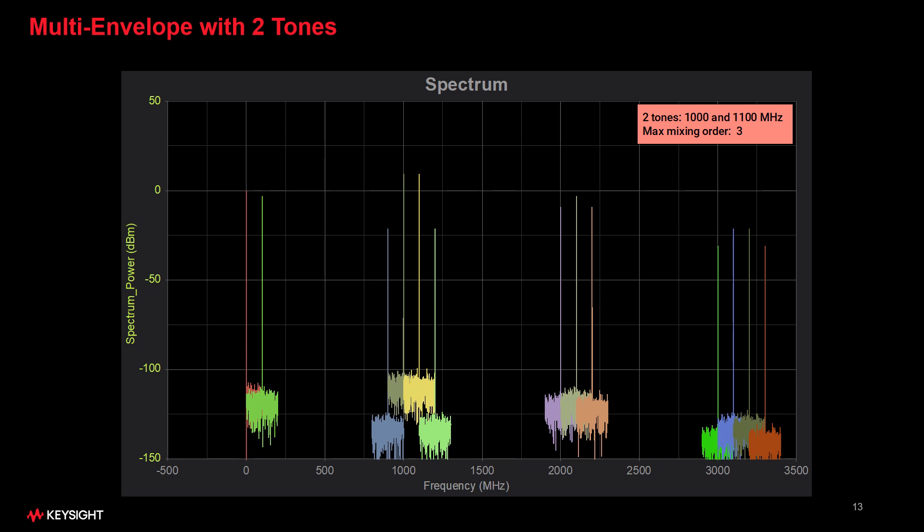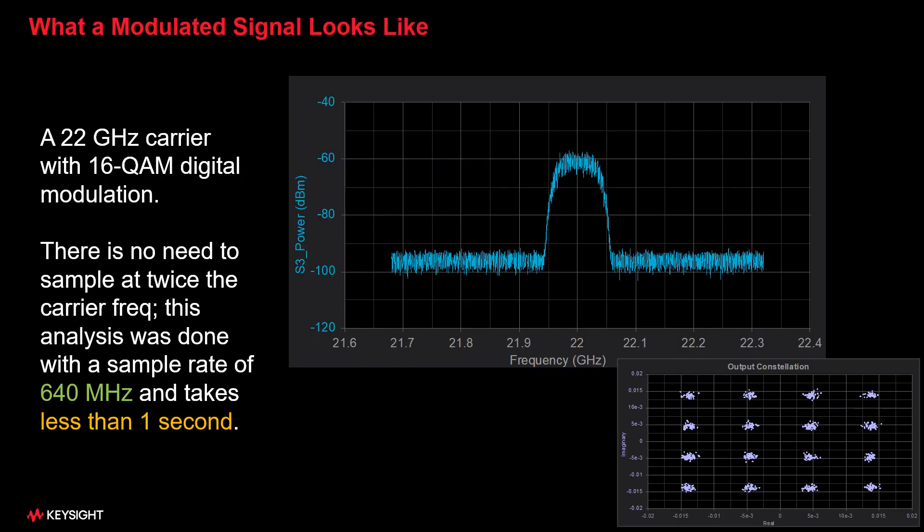To wrap up our look at multi-envelope, here's a screenshot of a carrier with modulation along with a demodulated constellation here in the lower right, which is a common measurement in envelope analysis. The carrier is at 22 gigahertz, but our sample rate was only 640 megahertz, which allowed us to capture 640 megahertz of bandwidth.